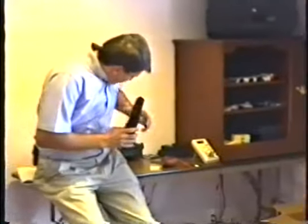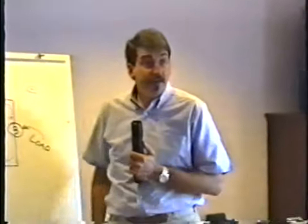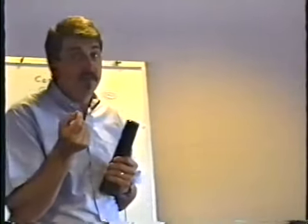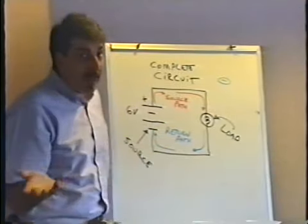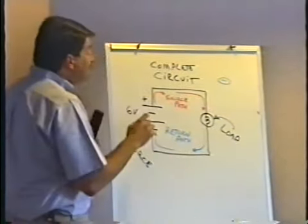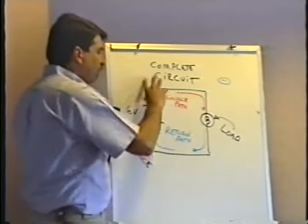Ben Franklin did a lot of experimenting with electricity, and he also drew schematic diagrams. What they thought electricity was in the beginning was some kind of weird invisible fluid. They thought some things had too much of this fluid and called them positive, and others didn't have enough and called them negative. They said electricity flows from positive to negative, and so they started drawing schematic diagrams that way.